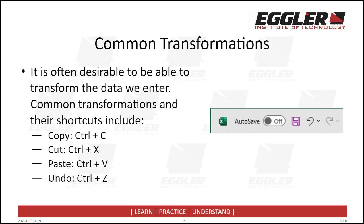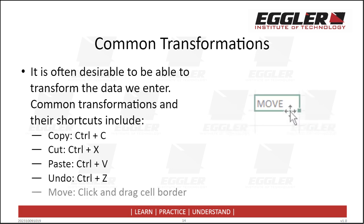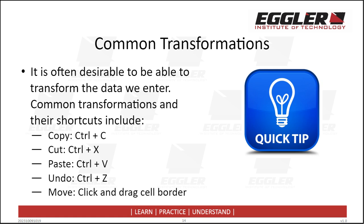Undo Transformation: This is an incredibly helpful transformation. If you complete an action in Excel and either make a mistake or it has an unintended outcome, you can simply undo it. The first way is to use the keyboard shortcut Control+Z. The second is to hit the Undo button at the top of the screen. Move Transformation: As an alternative to cut and paste, it is possible to drag a cell's contents to a target cell. Hovering your mouse over the green cell border will change it to a four-arrow icon. Once this appears, click and hold the border and drag the cell and its contents to the target location. These transformations are extremely helpful and will save you a lot of time.